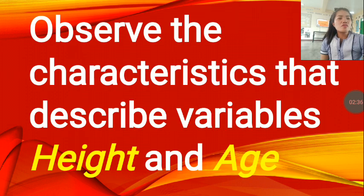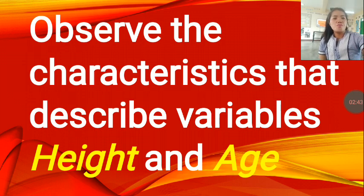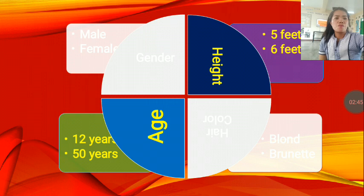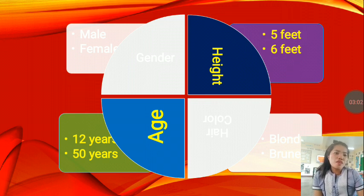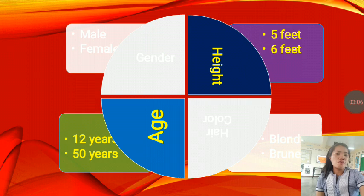And then, observe the characteristics that describe variables, the height and the age. We'll focus our attention now with the age and the height. What have you observed with its characteristics? You have the height, you are given an example there, you have five feet and six feet. For the age, you have 12 years and 50 years.